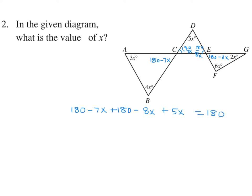Doing this math: negative 7 minus 8 plus 5 is minus 10. Put it on the other side, so we get 10x. And on this side we just have 180. Therefore x is equal to 18, and that's what they wanted.